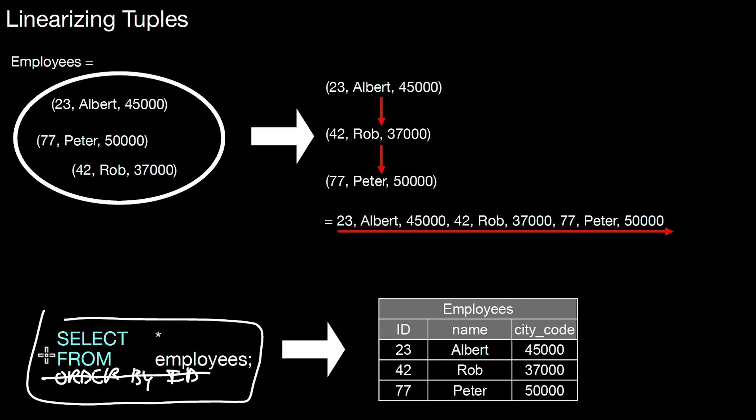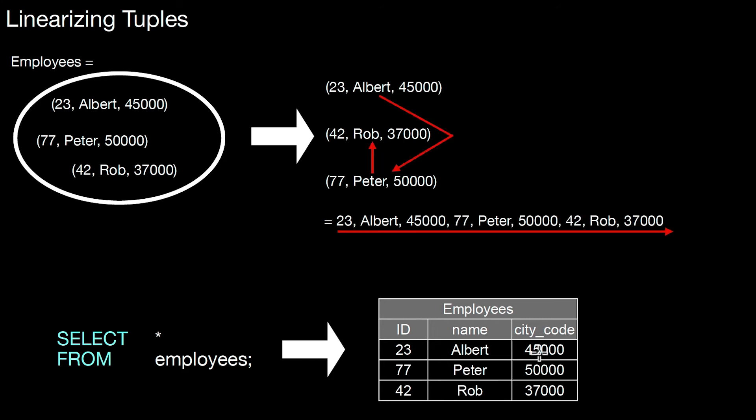In this example, as the database used this linearization of the data values, we will get back values in that order. But assume the database used a different order. Maybe it made a decision to first store the values of this tuple, then the values of that tuple, and then the values of that tuple. Then the individual data values are linearized like this. And now if you do a SELECT star from employees, you'll get back the values in this order.